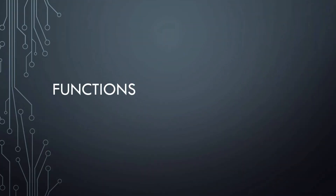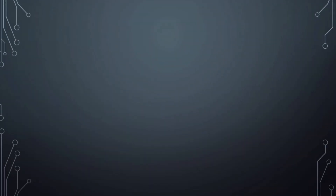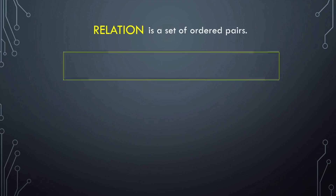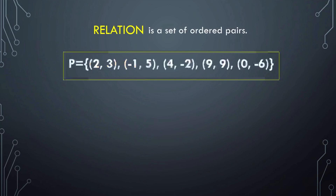Today I will be discussing functions. But before we proceed, let's recall first what a relation is. A relation is a set of ordered pairs. For example, the set containing (2,3), (-1,5), (4,-2), (9,9), and (0,-6). The symbol braces indicate a set.